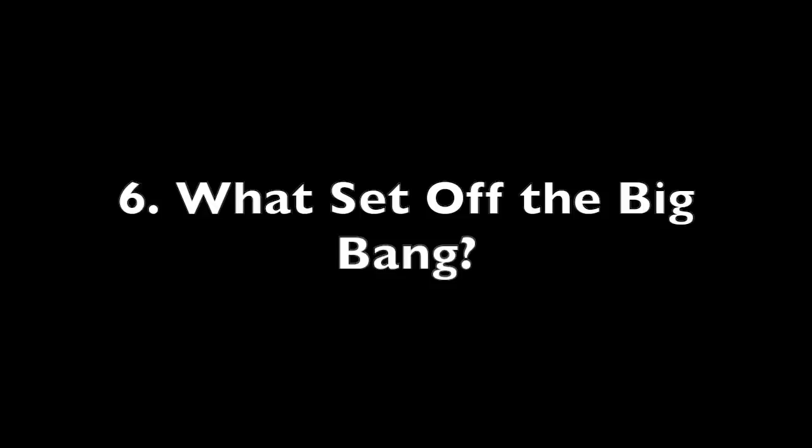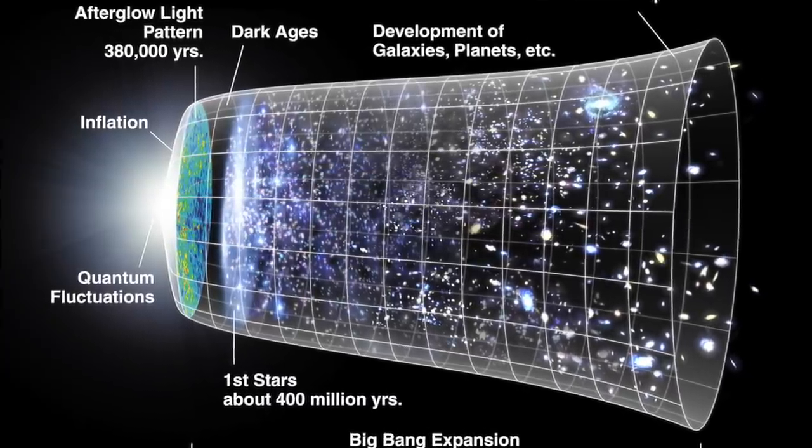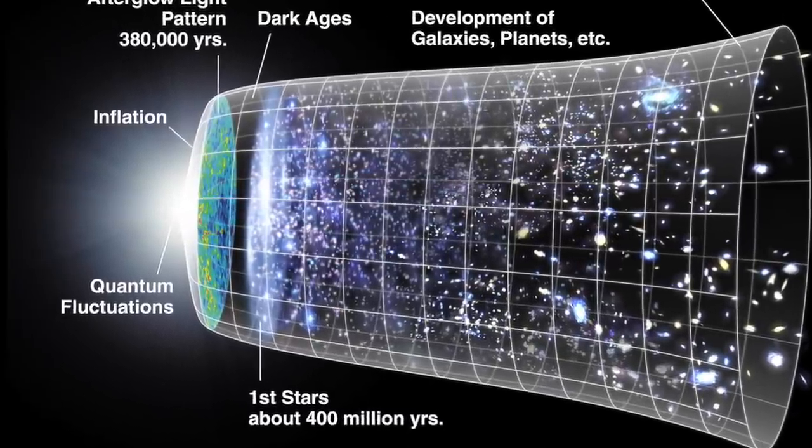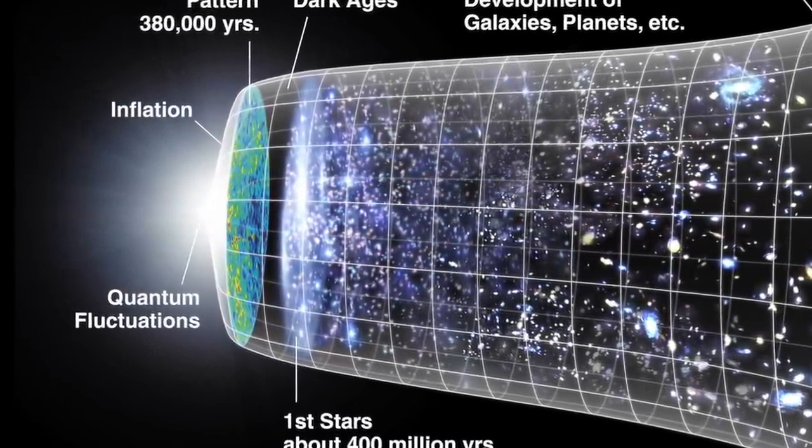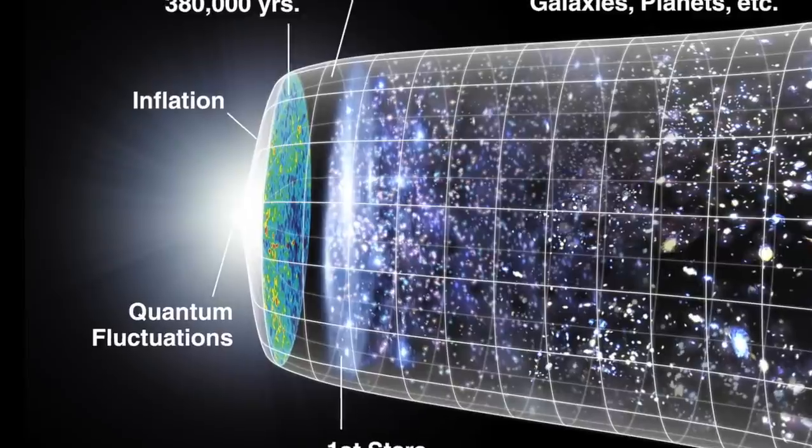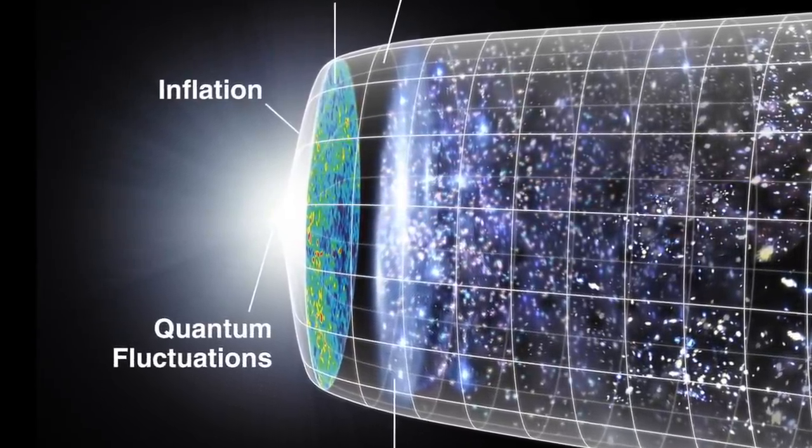Number 6: What set off the Big Bang? Regarding the Big Bang, generally, the earlier you go in that process, the less it is understood by current science. Known as the Planck Epoch, when applied to the very first moments of the Big Bang, the theories that physicists rely on to describe the universe, particularly Einstein's general relativity, no longer predict what exactly happened.